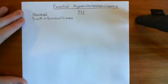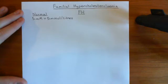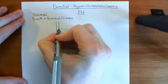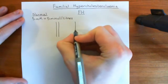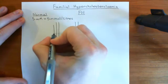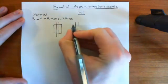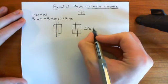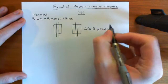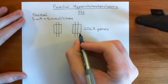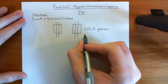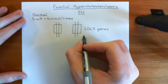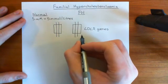In familial hypercholesterolemia, what occurs is that you get mutations in the genes for the LDL receptor. Just like when we were discussing autosomal recessive hypercholesterolemia, you have two genes for the LDL receptor — one gene and then the other gene, because you have two homologous chromosomes. Basically, what's going to happen in familial hypercholesterolemia is that you're going to get mutations in the LDL receptor gene that lead to the loss of function in the LDL receptor produced by that gene.